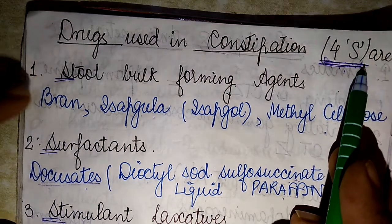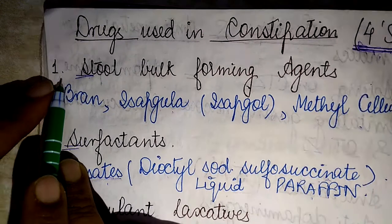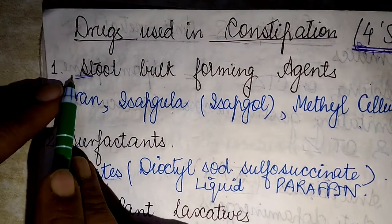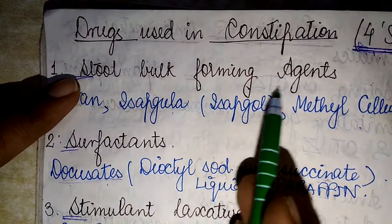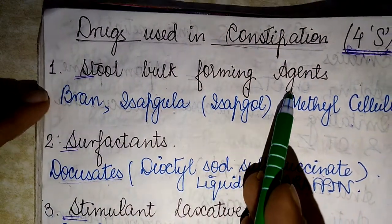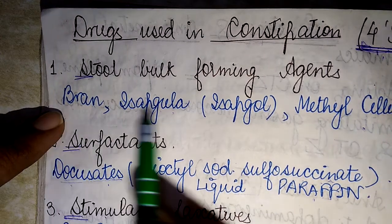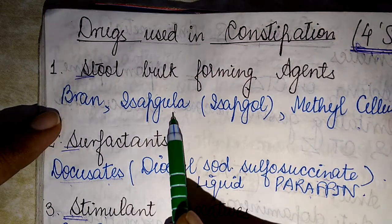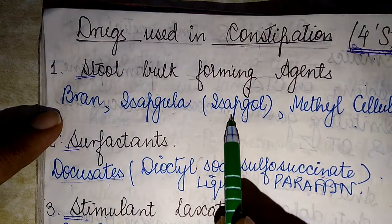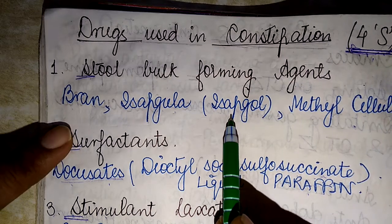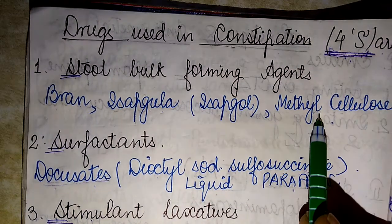The first S stands for the stool bulk forming agents. The examples include bran, ispaghula (commonly called ispaghula husk), and methylcellulose.